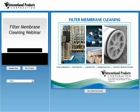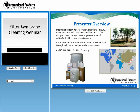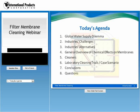I'll begin the webinar with a brief overview of our company. International Products manufactures specialty cleaners and TAD rubber assembly lube. Our manufacturing facilities are headquartered in New Jersey with worldwide distribution. Today's agenda includes: global water supply dilemma, industry's challenges, industry's alternatives, general overview of chemical effects on membranes, cleaners, laboratory cleaning trials and their scenarios, conclusions, and questions.